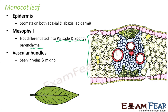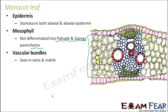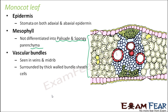Vascular bundles are seen in the veins and the vein midrib. The vascular bundles run through the leaf and are surrounded by thick-walled bundle sheath cells. So essentially the monocot leaf has two layers of epidermis, parenchyma cells throughout, and vascular bundles in the veins and midrib.